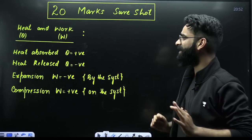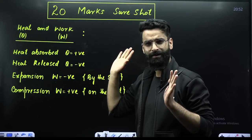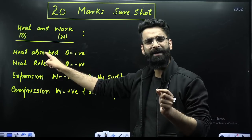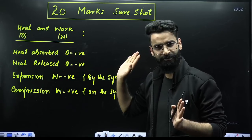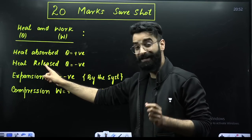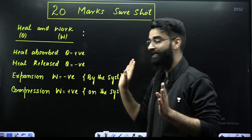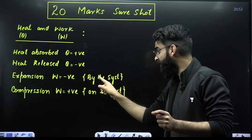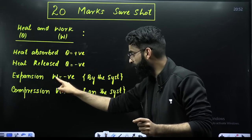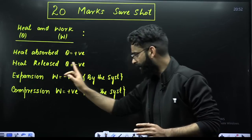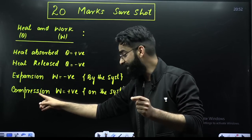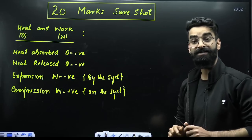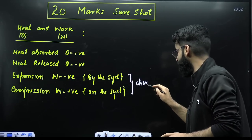The first concept which I'm going to discuss here is about heat and work. Just remember four things. Whenever heat is absorbed by the system, Q value is taken as positive. Whenever heat is released by the system, Q value is taken as negative. Whenever there is expansion, we always say work is done by the system — W value is taken as negative. Whenever there is compression, we always say work is done on the system — W value is taken as positive, in chemistry.